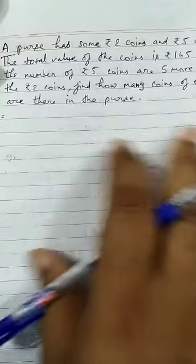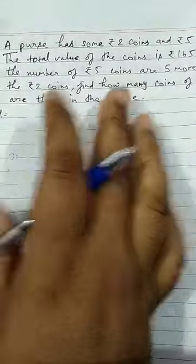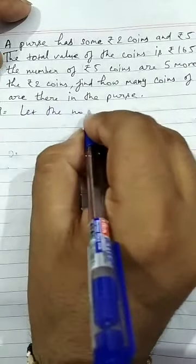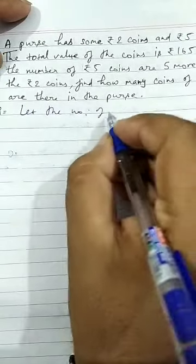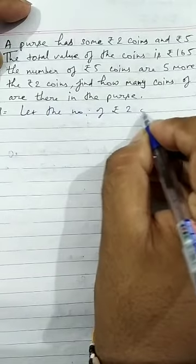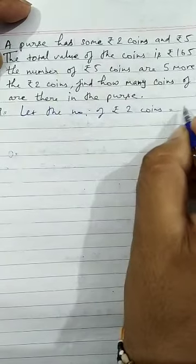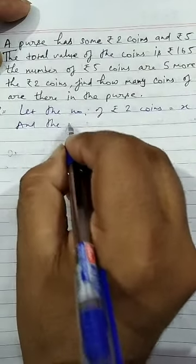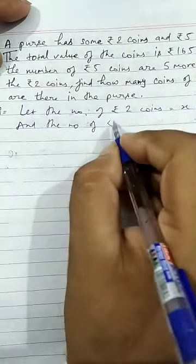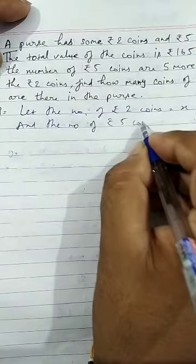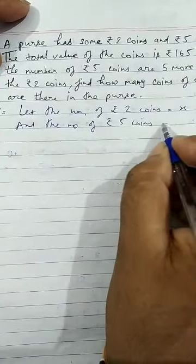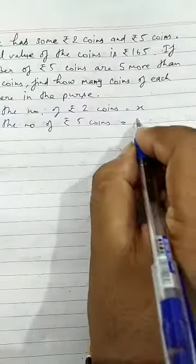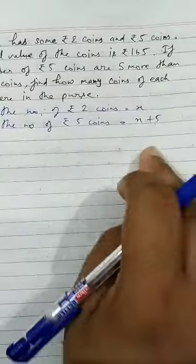So we can take rupees 2 coins as X. So we will write here, let the number of rupee 2 coins be X and then the number of rupee 5 coins, now 5 rupee coins is 5 more than rupee 2 coins, so we will write here X plus 5.